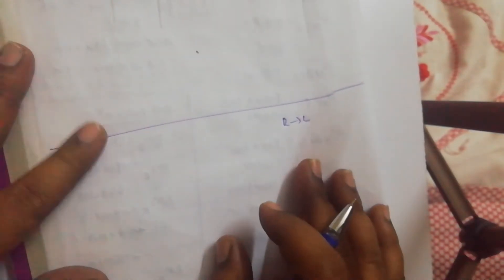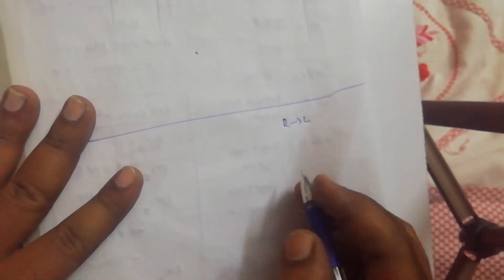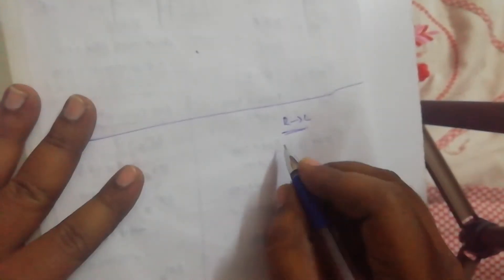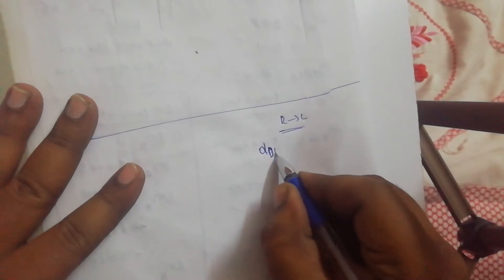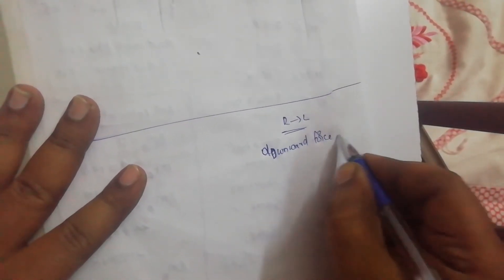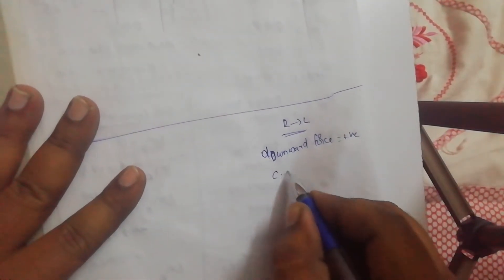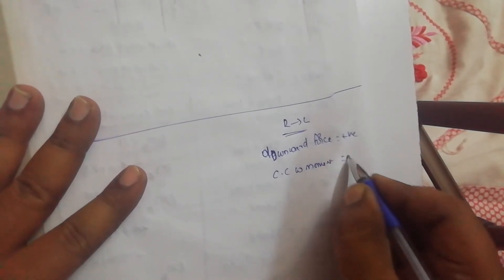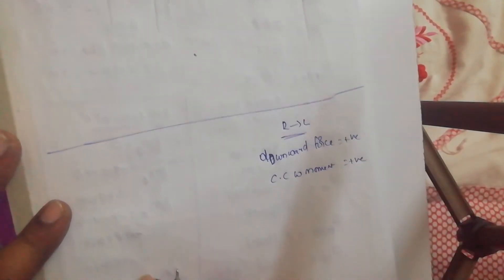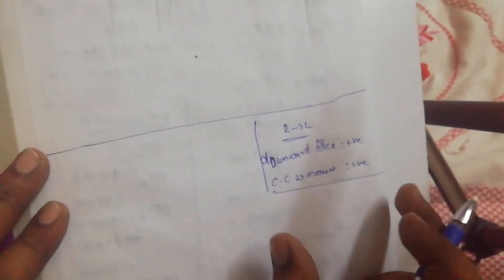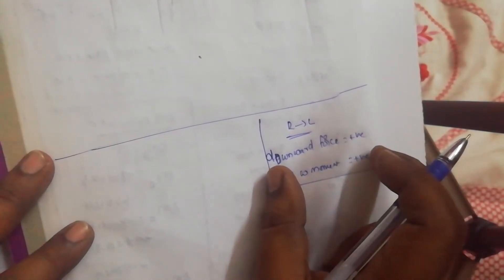For sign convention, we are solving the problem from right to left. It is not compulsory to always solve from right to left — sometimes we prefer left to right depending on the type of load — but most of the time we solve from right to left. When solving right to left: downward force is positive, and counterclockwise (CCW) moment is positive. Write this in a corner as a reminder for solving these problems.